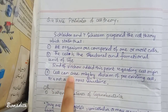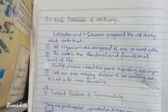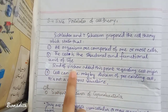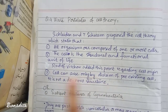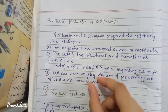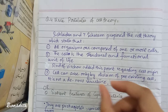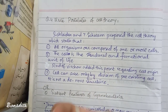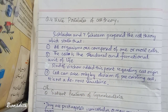The first postulates were incomplete, so Rudolf Virchow added to them. He added that cells will always arise from existing cells. This means that cells will not be made from themselves — the first cell will always be divided from an existing cell.